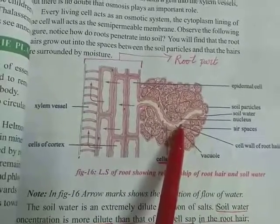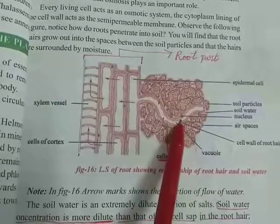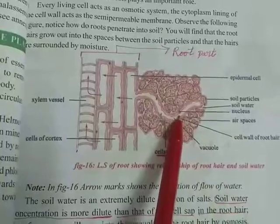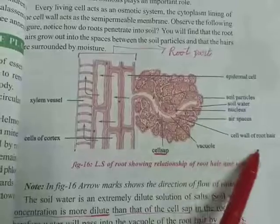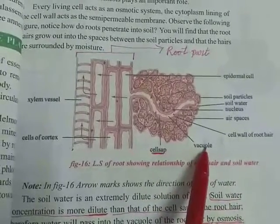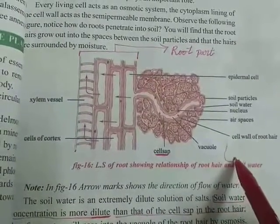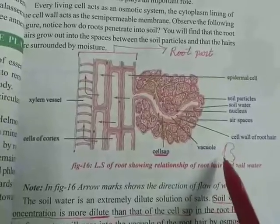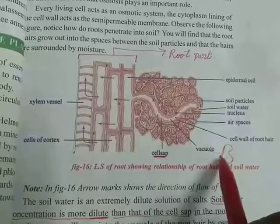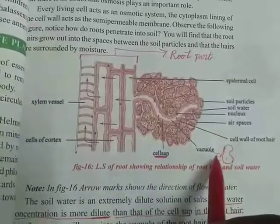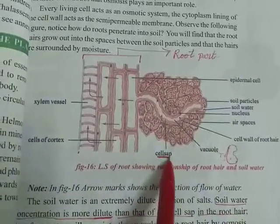The cell wall is the outermost layer in a plant cell, so root hairs are also covered by a cell wall. Vacuoles are the big balloon-like structures we can see in a plant cell, already discussed in class nine. These vacuoles are used for storage of water and some waste materials.